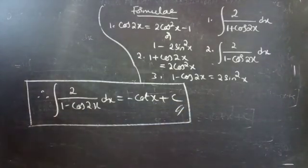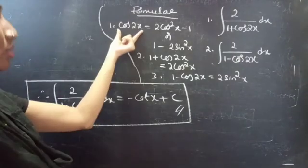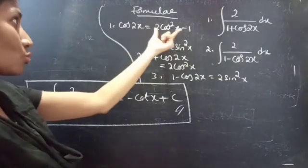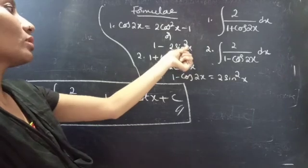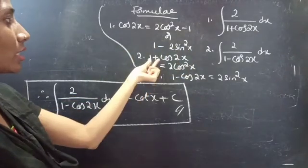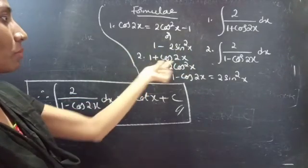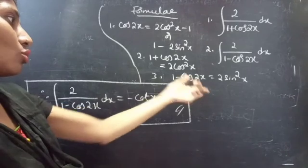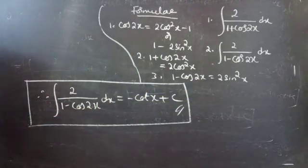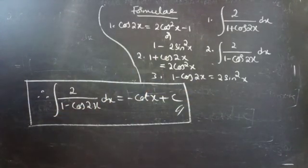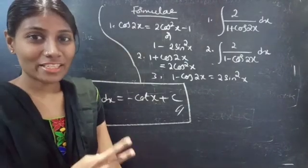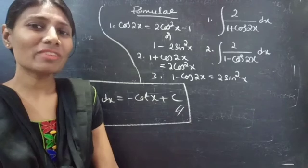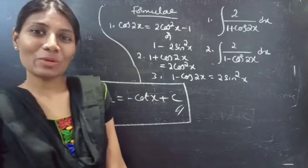So here we have used the formula cos 2x equals to 2 cos square x minus 1 or 1 minus 2 sin square x, and converted into 1 plus cos 2x and 1 minus cos 2x respectively. We have seen two integrals in this video. Hope you understand — we will see you in the next video.